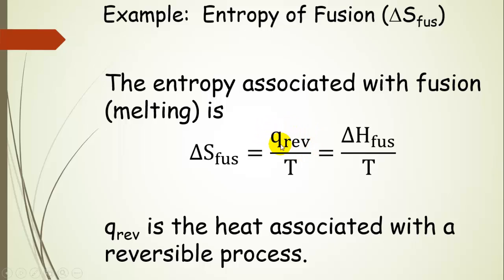Remember that the heat at constant pressure is delta H. And so since we're talking about melting or fusion, we have delta H of fusion divided by the temperature at which this system is held. So this quantity can be looked up for substances, as can the entropy of fusion. These are tabulated data.